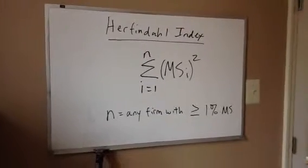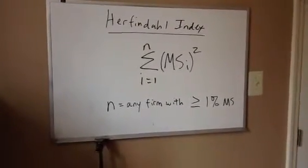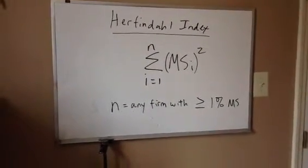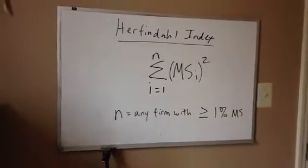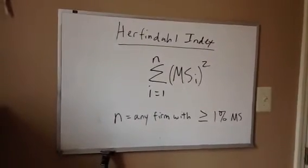So it's very important. Students often mistake n in a Herfindahl index. They think it's either 4 or 8 like the concentration ratios. It is not. You can have more firms in a Herfindahl index calculation.